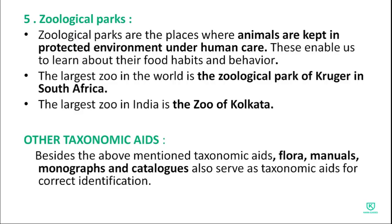Zoological parks are places where animals are kept in a protected environment under human care. These enable us to learn about their food habits and behavior. The biggest zoo in India is the zoo of Kolkata.